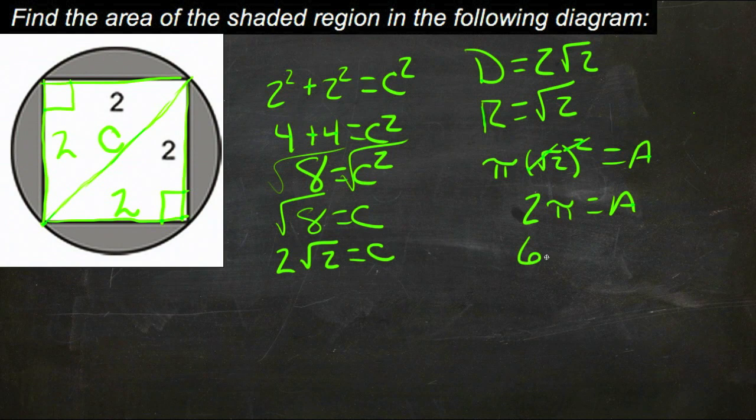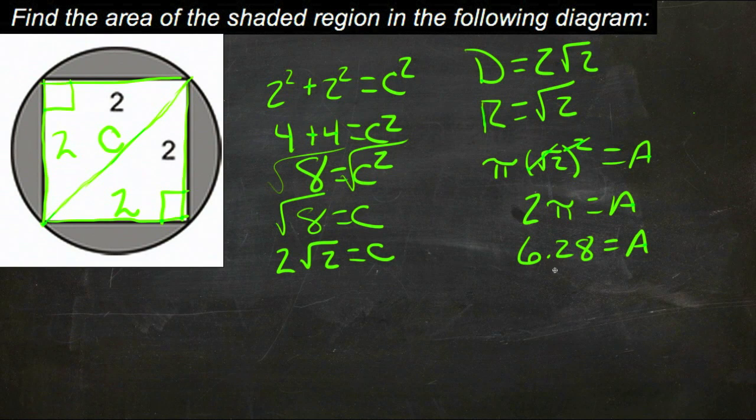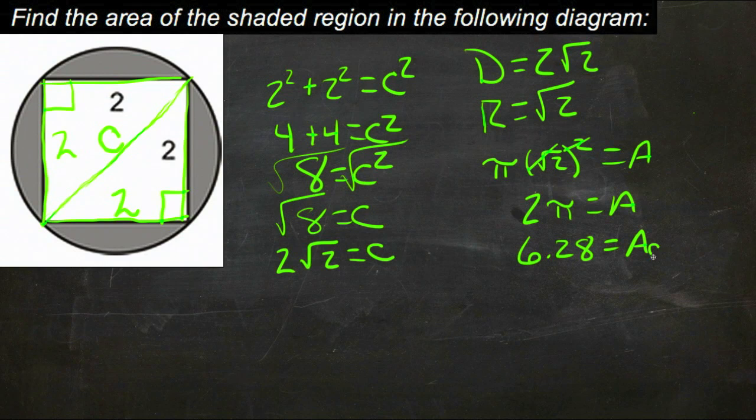2 pi is about 6.28 equals the area, so the area of the circle is 6.28. The area of the square is just 2 by 2, so 4 equals the area of the square.